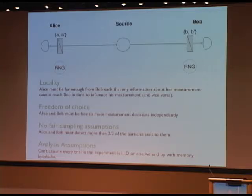Second is freedom, sometimes called freedom of choice, and this is quite important. Alice and Bob really need to be able to make their measurement decisions independently. If somehow the source is able to correlate to Alice and Bob's random number generators or predict what their settings are going to be, it's game over. You can't do this protocol at all.